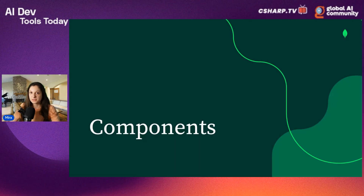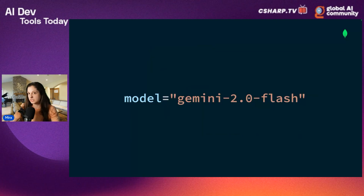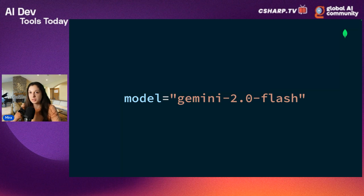What are the components of this system? We have the model — the most important part of our agent is still the large language model. For this demo, I'm going to use Gemini 2.0 Flash. It is a pretty good and fast model, so it's appropriate for an agent that calls it multiple times. There will be some latency involved because the agent calls the model multiple times, but we still want it to be quick enough.